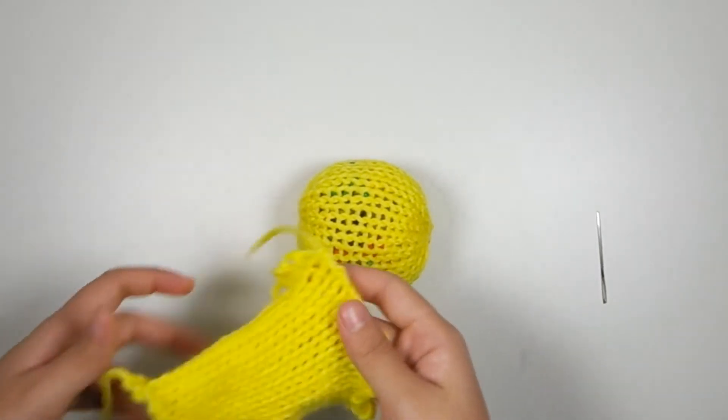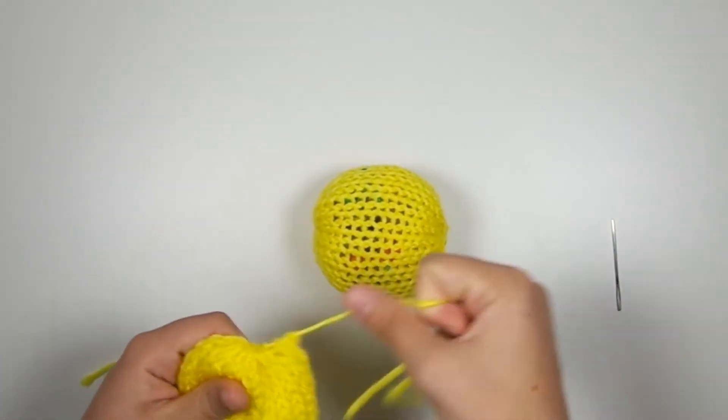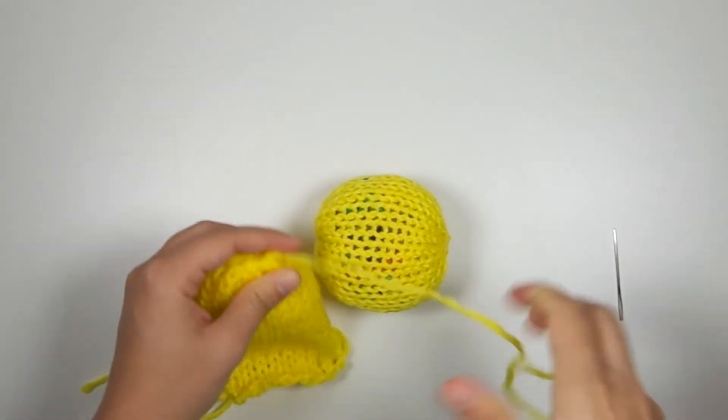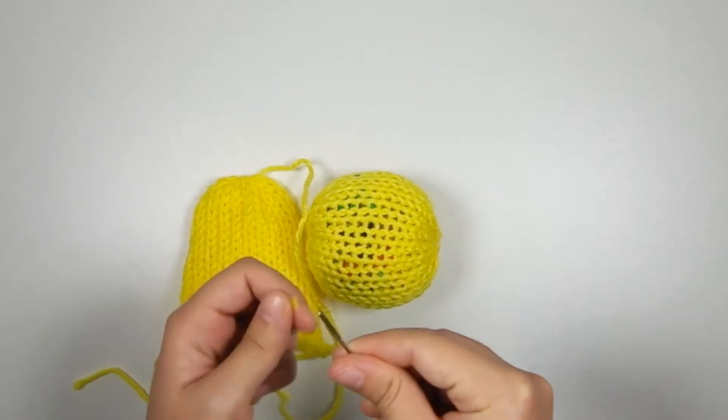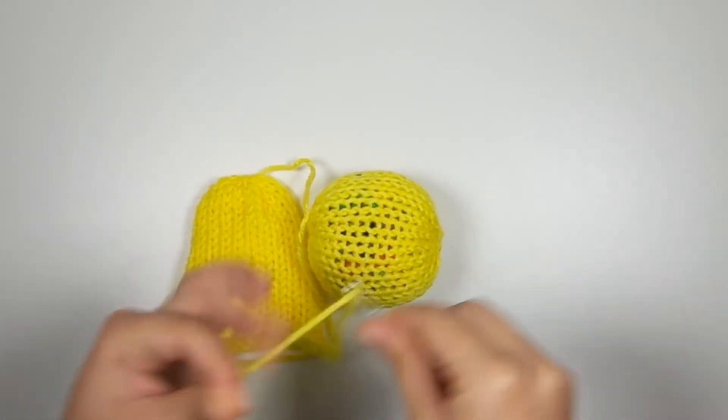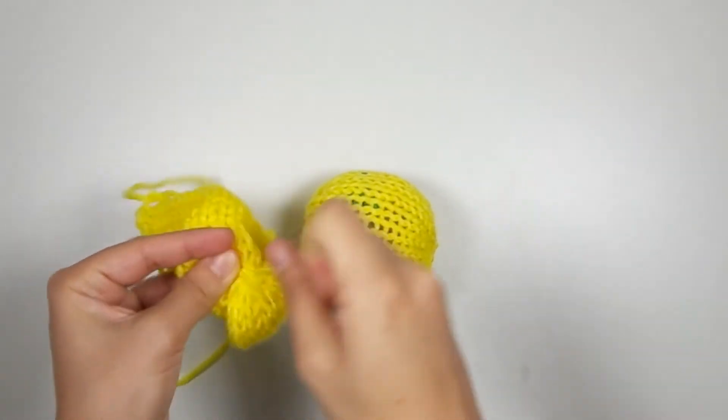So first what I'm going to do is take one end of the tube, whichever one you want to use first, cinch it shut, like so. I'm going to put the end of that yarn on my yarn needle, and I'm going to tie a knot to secure.